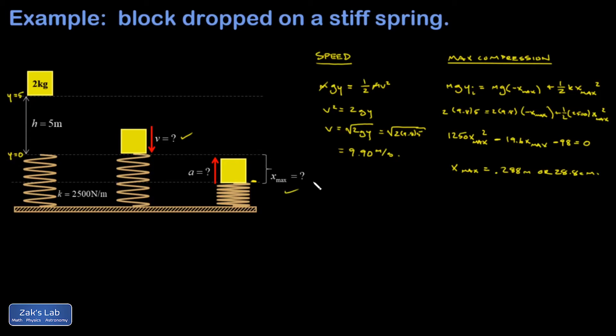Finally, we're going to get the acceleration of this mass at the maximum compression. So that spring is exerting an upward force on the mass, and gravity is still pulling down, and you don't want to forget about that. So there's gravity, mg, 2 kilograms times 9.8 meters per second squared. And I get 19.6 newtons for that.